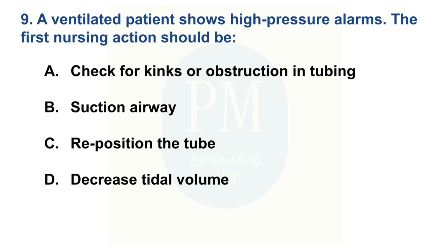A ventilated patient shows high pressure alarms. The first nursing action should be. Option A: Check for kinks or obstruction in tubing. Option B: Suction airway. Option C: Reposition the tube. Option D: Decrease tidal volume. The correct option is Option A — Check for kinks or obstruction in tubing.